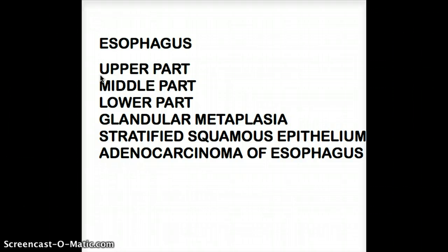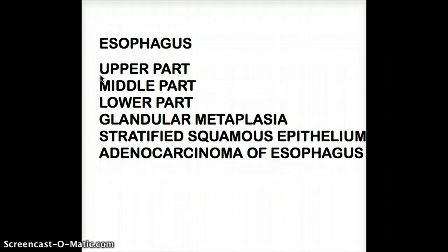The risk factors follow A through F. A for alcohol, B for Barrett's, C for cigarettes, D for diverticuli or Zenker diverticulum, E for esophageal web, F for familial. It's very easy to remember.